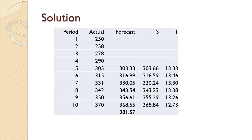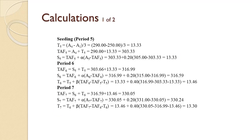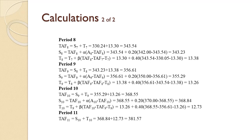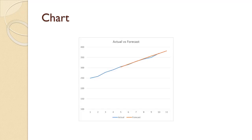A compact solution to the example is shown on the slide. The next two slides show all of the calculations. This slide shows the calculations for periods 5 through 7. This slide shows the calculations for periods 8 through 11. Pause the video and examine them in detail if you made any mistakes. This slide shows a chart of the results. Notice how closely the trend-adjusted forecast tracks the actual data.